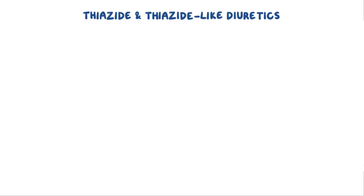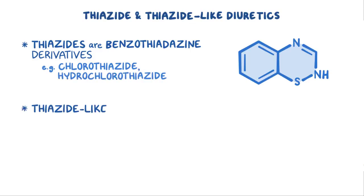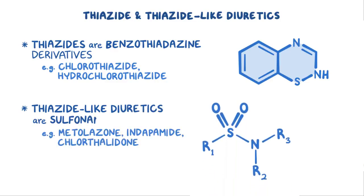Now let's look at the diuretic team. Thiazides and thiazide-like diuretics have the same effect; the difference stems from their chemical structure. Thiazides are benzothiadiazine derivatives, like chlorothiazide and hydrochlorothiazide, and they all end in 'thiazide.' Whereas thiazide-like diuretics, like metolazone, indapamide, and chlorthalidone, are sulfonamide derivatives.